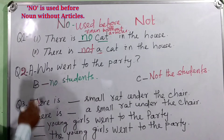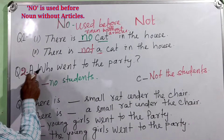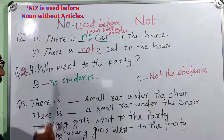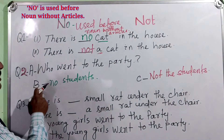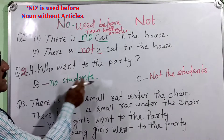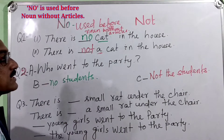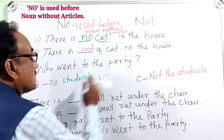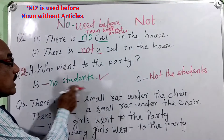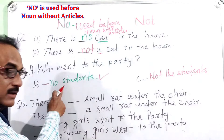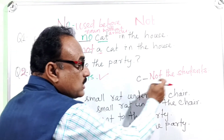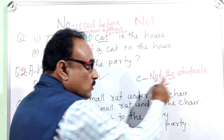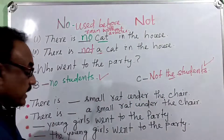Look at the second question. A — question: Who came into the party? B — Answer: No students. C — Answer: Not the students. Both are correct sentences. 'No students' means none at all came. 'Not the students' specifies which group — both are correct.